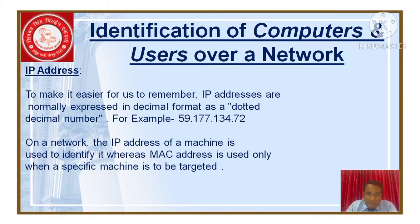To make it easier to remember: it is very difficult if the IP address is written in bits form — 32 bits. So it is easy to learn in a decimal format — you can say dotted decimal number. For example: 59.177.134.72 — this is one example. Right now it is in decimal format, not binary format, because if you write in binary format you'd have to write 32 bits. In a network, the IP address of a machine is used to identify it.